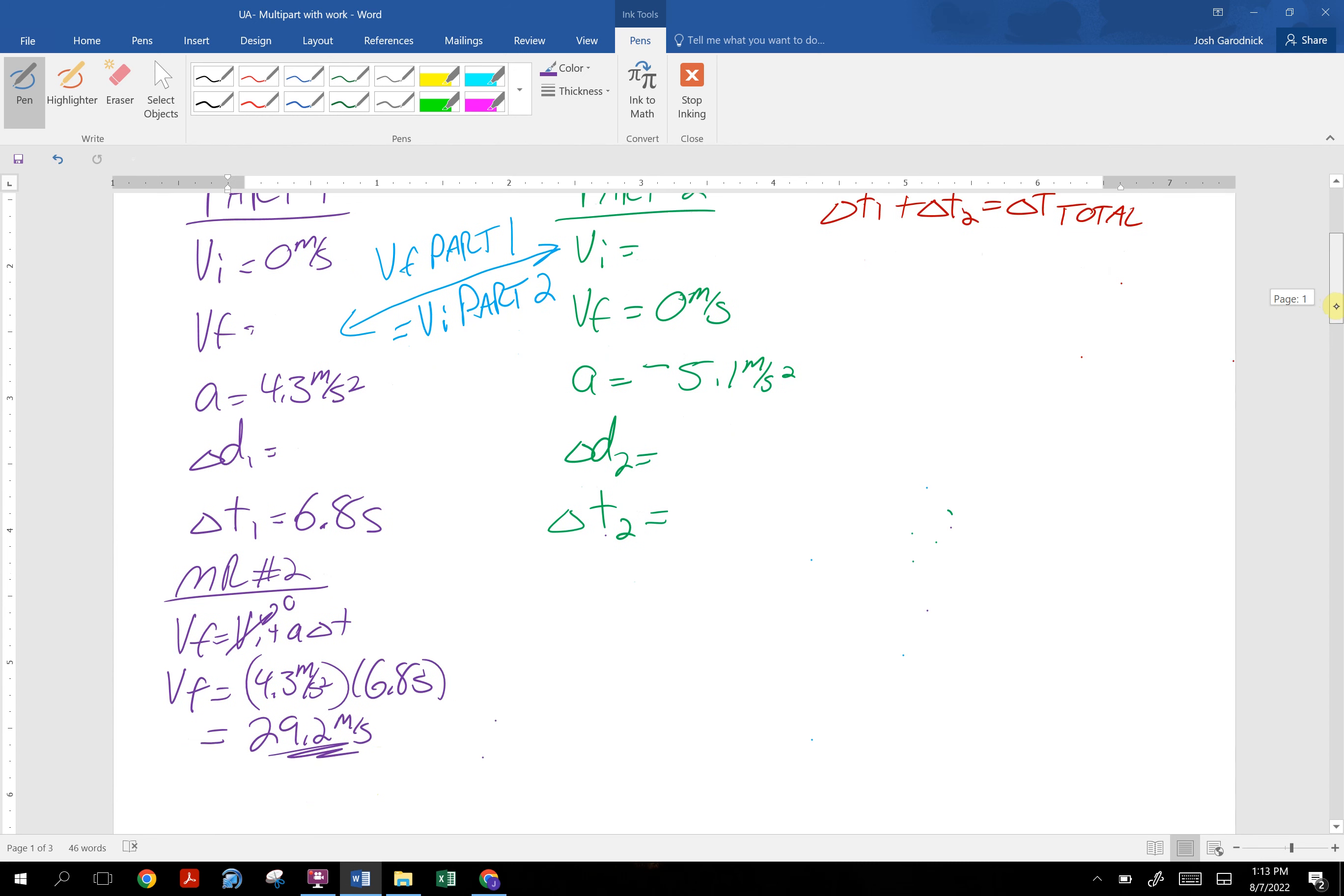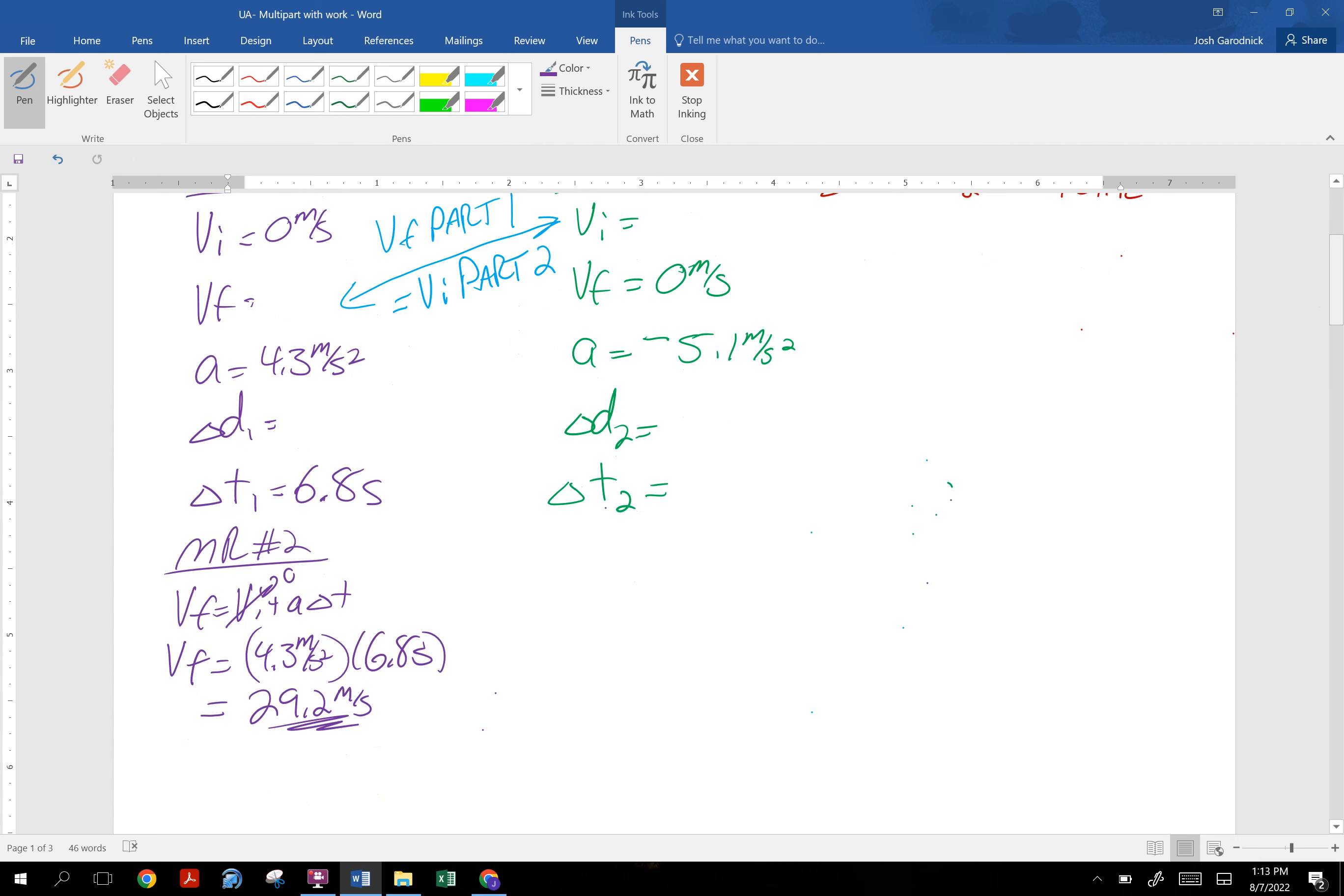That will become the initial velocity for part two. We are asked to solve for total distance, so I should solve for distance as well. I am going to use math rep number three: delta d is initial velocity times time plus one half acceleration times time squared. The initial velocity is zero, so that kind of helps out. So it's going to be one half a t squared. And you get a distance of 99.4 meters.